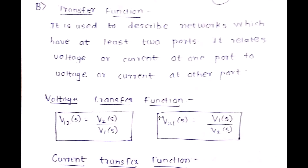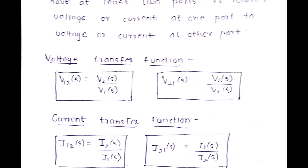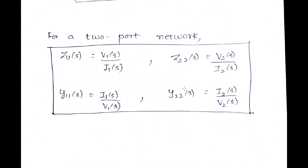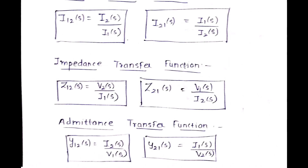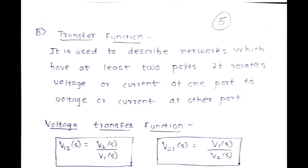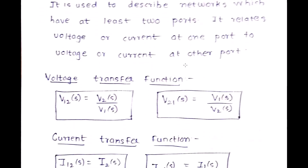For the transfer function, unlike the driving point function where excitation and response are at the same port, here at least two ports are involved. It relates the voltage or current at one port to the voltage or current at the other port. The voltage transfer function V12(s) = V2(s) / V1(s), and V21(s) = V1(s) / V2(s). Note the subscript convention — second digit is output port, first is input.